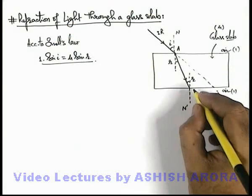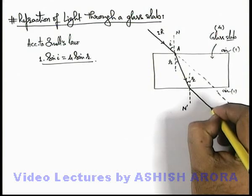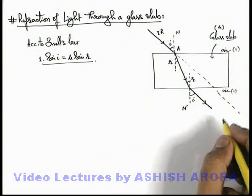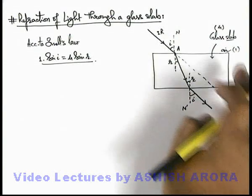By Snell's law we can directly state that the final light ray will emerge out in air at the same angle at which it was incident, because the refractive indices are same for the air from which the light was getting into the glass and the air into which the light is emerging out.